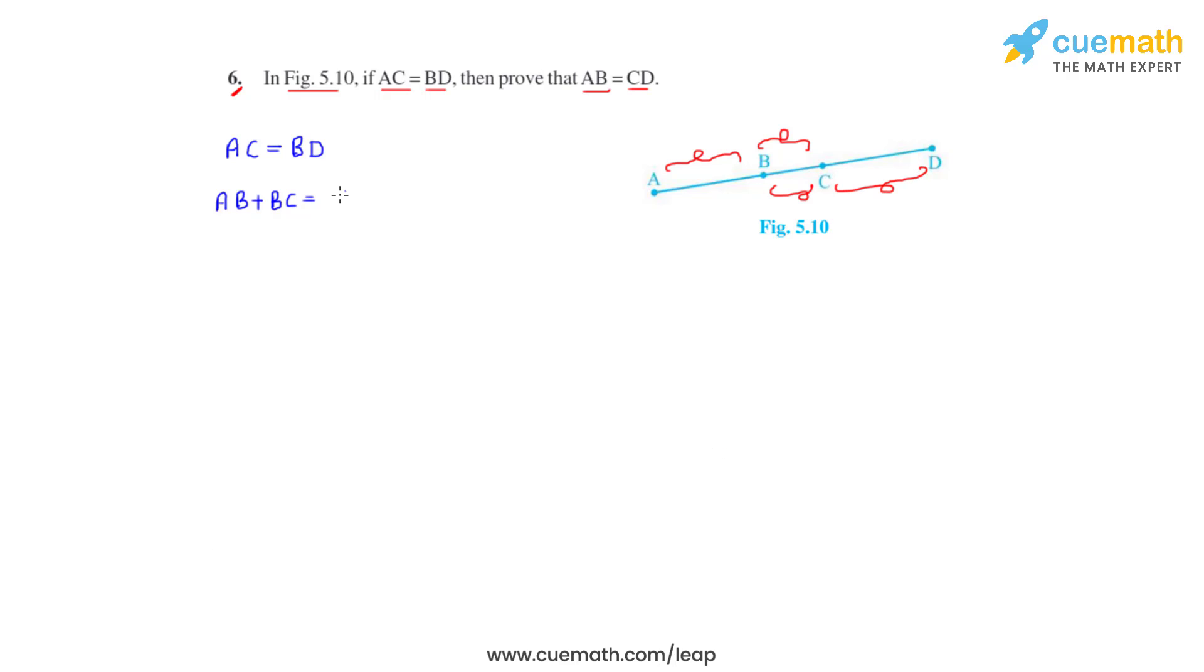So let's write that. BD equals BC plus CD. Now point B lies between A and C as can be seen in the figure and C lies between point B and D.